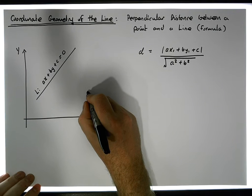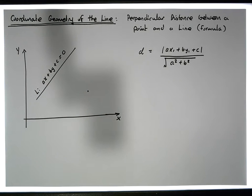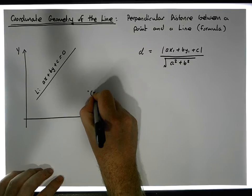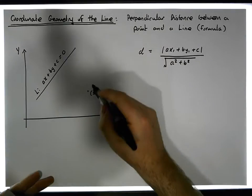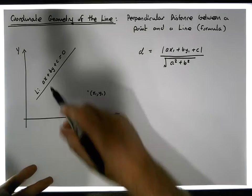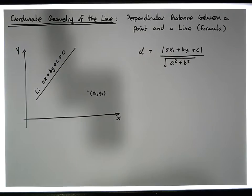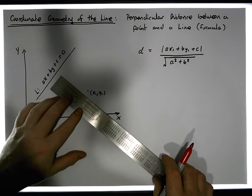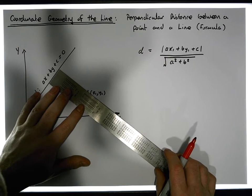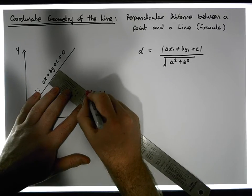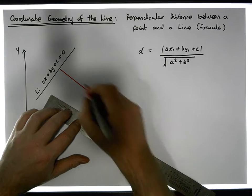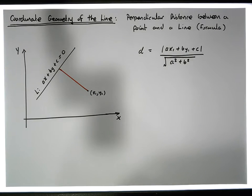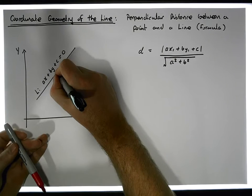And let's say we have a point in space somewhere here, and let's say this point is (X₁, Y₁). What we're interested in is how far this point is away from this particular line — and more importantly, we're interested in the perpendicular distance from the point to the line. So we're interested in what is this distance here between that point and this line, and this is a perpendicular distance.